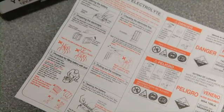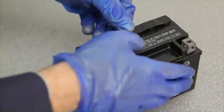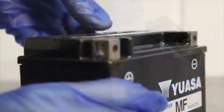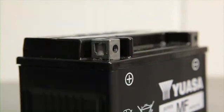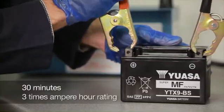Once completed, push the cap strip down using firm pressure from both hands until it's fully flush with the top of the battery. Let the battery stand for at least 30 minutes, then load test it at three times its ampere hour rating for 15 seconds, or use an automatic battery tester to determine the battery's condition.